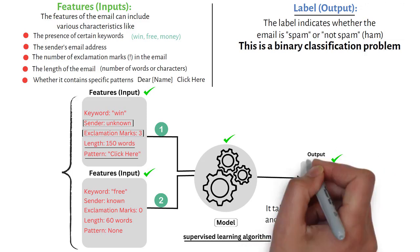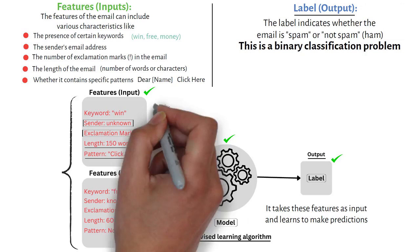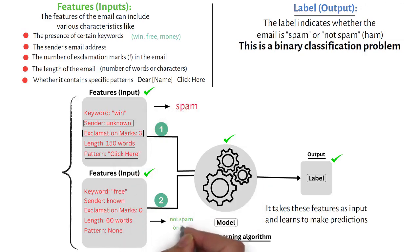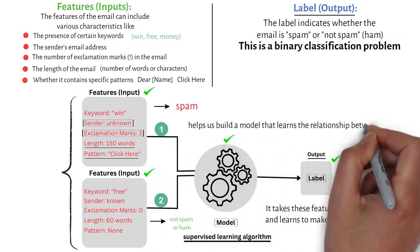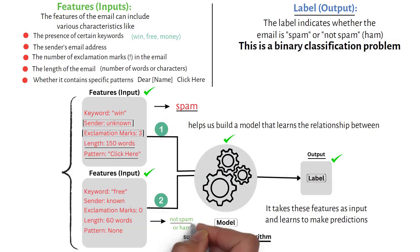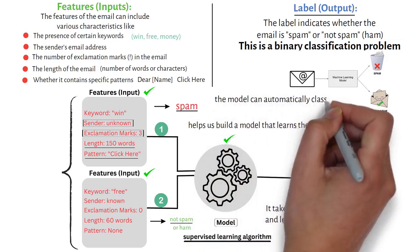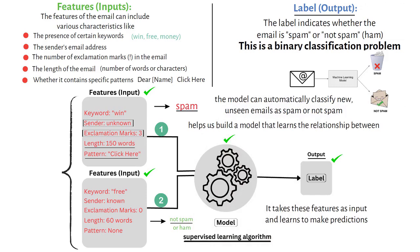On the right side, we have the output, which is the label or prediction. For the first email, the model predicts spam, and for the second email, it predicts not spam (ham). Supervised learning, in this case, helps us build a model that learns the relationship between the email features and the labels — spam or not spam. Once trained, the model can automatically classify new, unseen emails as spam or not spam based on their characteristics.